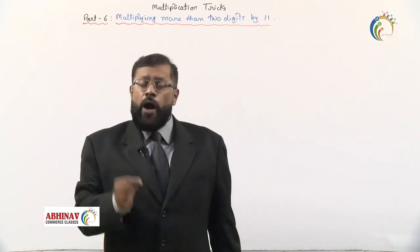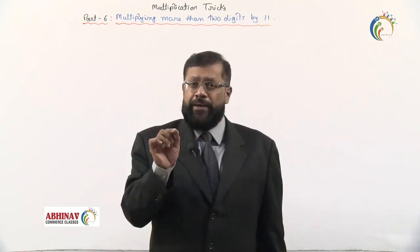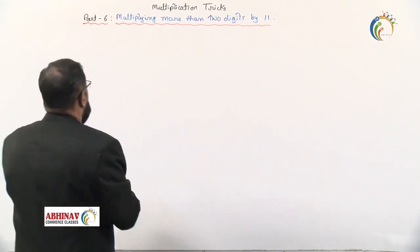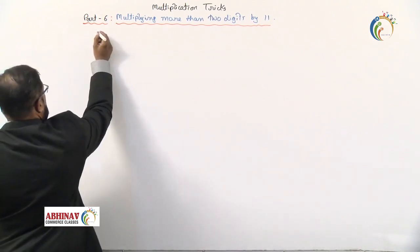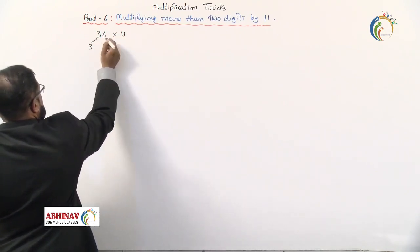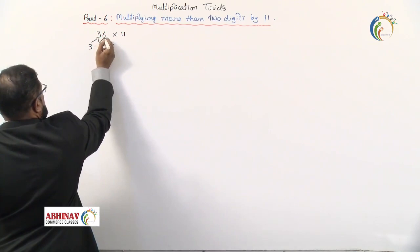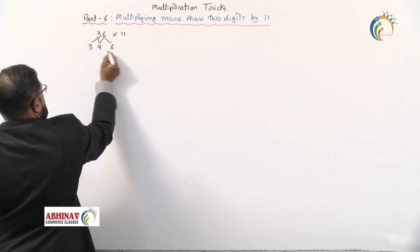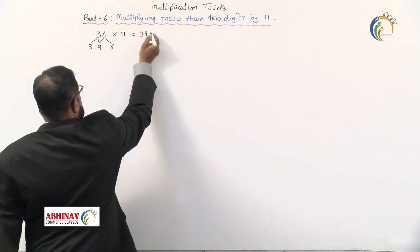We've already learned how to multiply a two-digit number by 11. Let me repeat that. When multiplying, say 36 by 11, we write 3, write 6, then 3 and 6 total is 9, so the multiplication comes to 396. That is what we do.